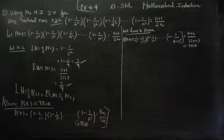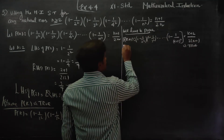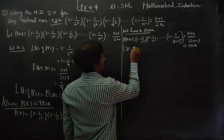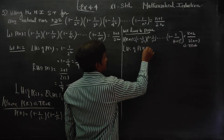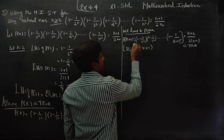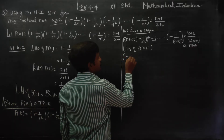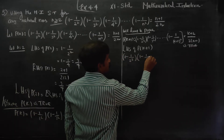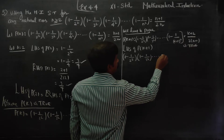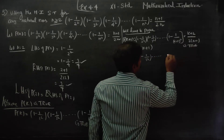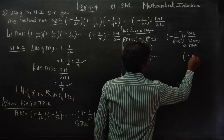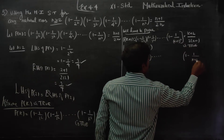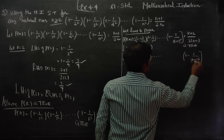We will start with LHS of P of k plus 1 and show it equals RHS of P of k plus 1. LHS of P of k plus 1: 1 minus 1 by 2 square, 1 minus 1 by 3 square, dot dot dot, 1 minus 1 by k plus 1 whole square.